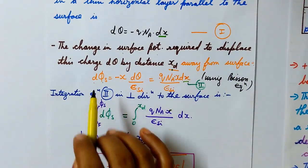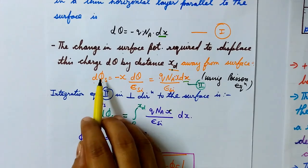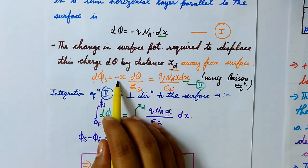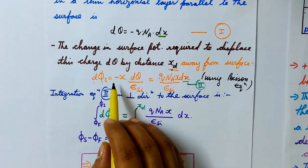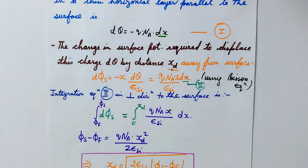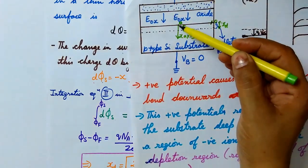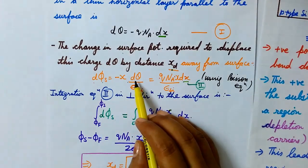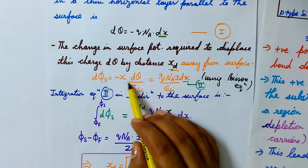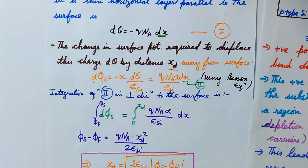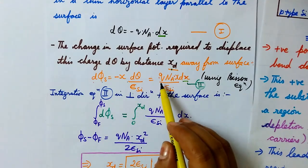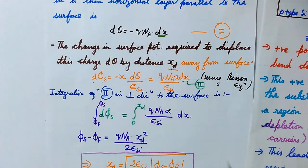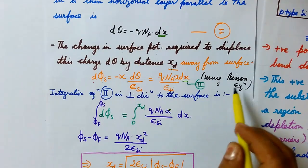The change in surface potential is dφs. Since we are moving away from the surface in the x-axis direction: dφs equals minus x times dQ divided by the permittivity of the silicon substrate εsi. Substituting the value of dQ, we get dφs equals q·NA·dx upon εsi — the two negatives cancel to give a positive. This is equation number two, obtained from the Poisson equation.